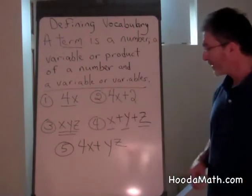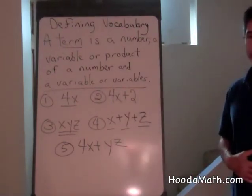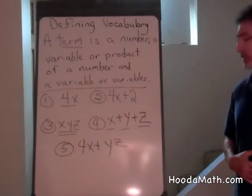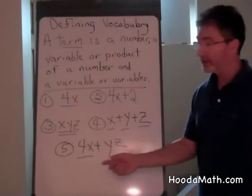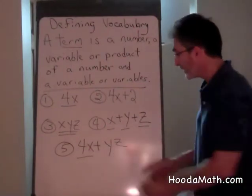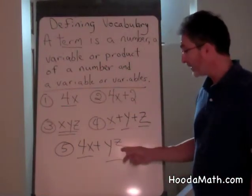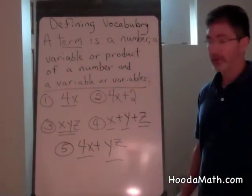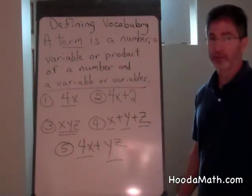One, two, three. How many terms do you think are in the final example? Two. 4x is one of the terms. That's the product of a number and a variable. And yz is another term because yz is the product of two variables. There are two terms separated by an addition sign.